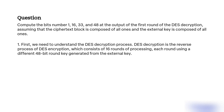First, we need to understand the DES encryption process. DES decryption is the reverse process of DES encryption, which consists of 16 rounds of processing, each round using a different 48-bit round key generated from the external key.